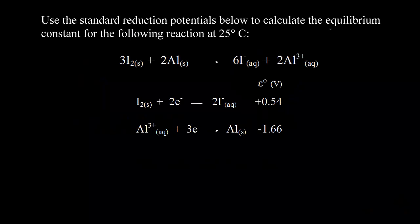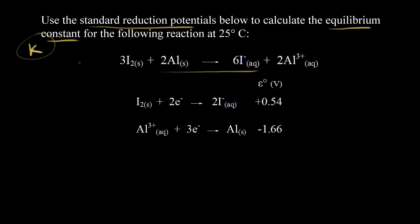Our goal is to calculate the equilibrium constant K for this reaction. We're going to use the standard reduction potentials to do so. In the previous video, we talked about the relationship between the equilibrium constant K and the standard cell potential E zero. So if we can find E zero for this reaction, we can calculate the equilibrium constant K — and we've seen how to find E zero in earlier videos.